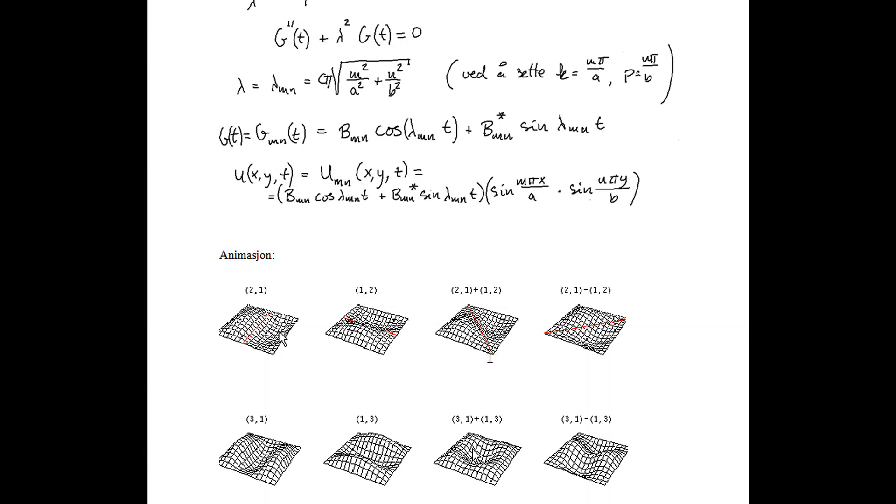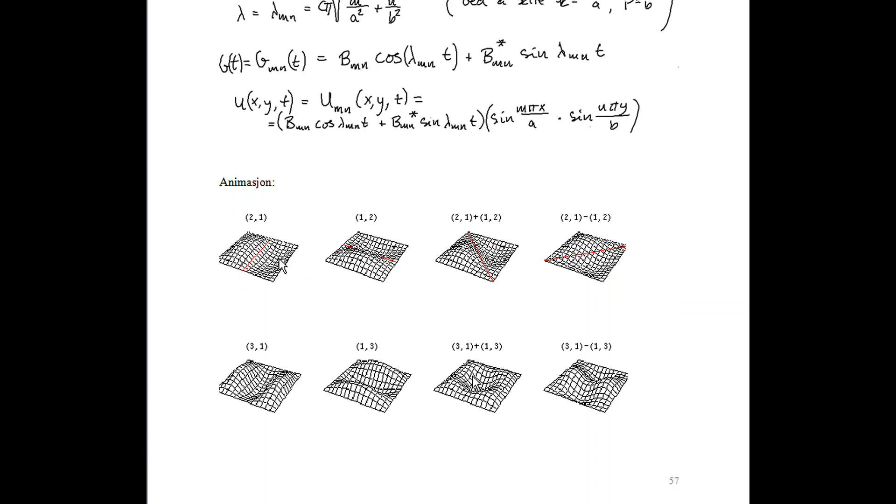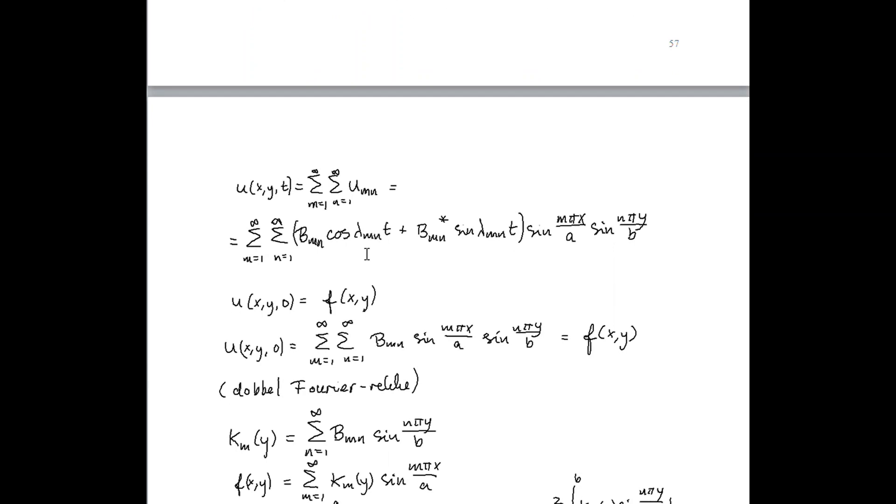And, here we see the node points when we sum two such eigenfunctions. This eigenfunction is a situation we get when m is equal to 1 and n is equal to 2, and so on. So, we get different types of eigenfunctions, and we can sum them. Take the infinite double sum of these eigenfunctions, and then we can hope for getting the complete solution, general solution, of the rectangular membrane.